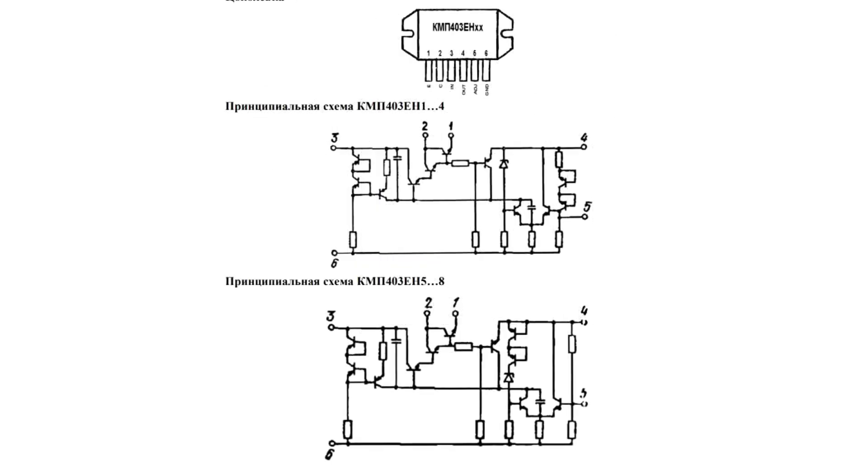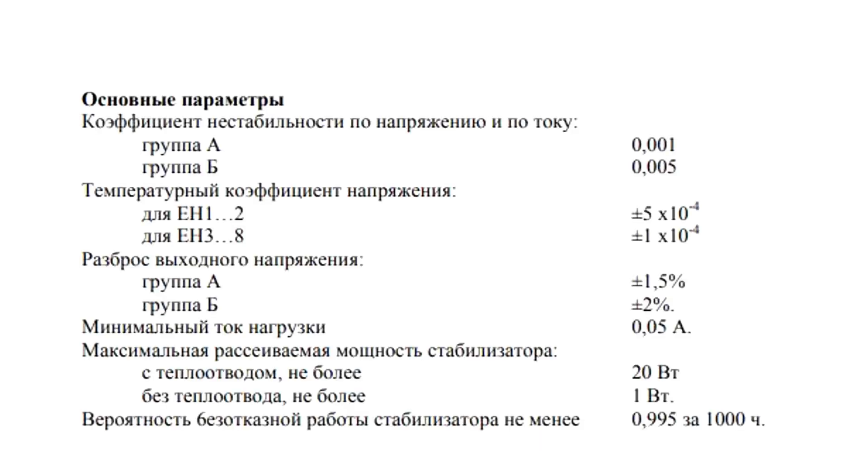The microchip includes 11 transistors, including a power transistor, a couple of capacitors, resistors, and a Zener diode. The maximum dissipated power is 1W without a heat sink and 20W with a heat sink.